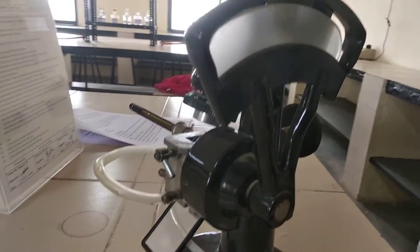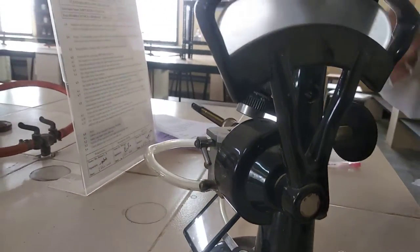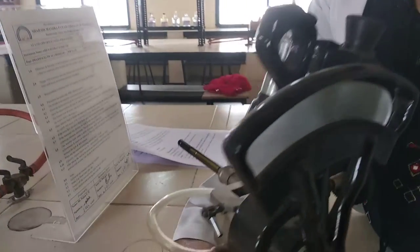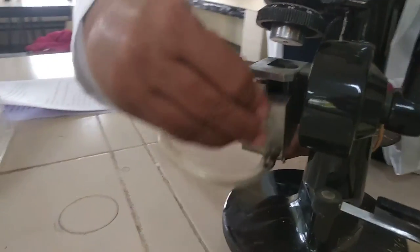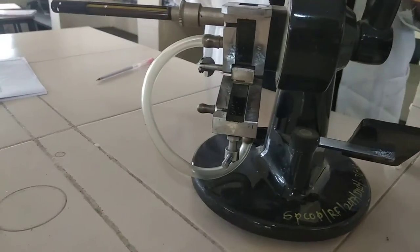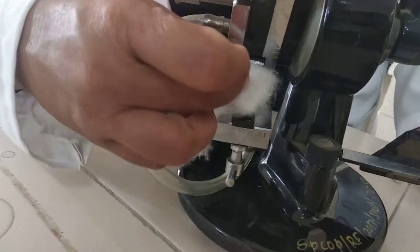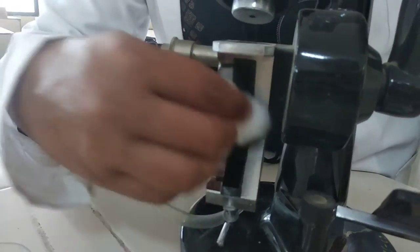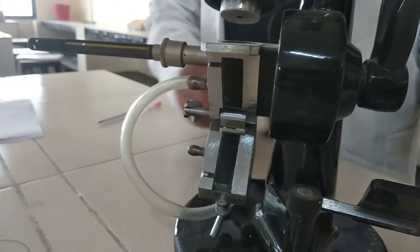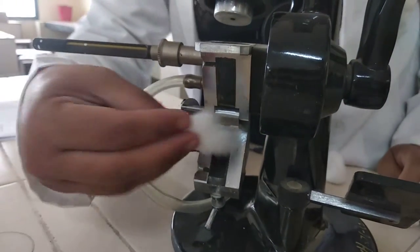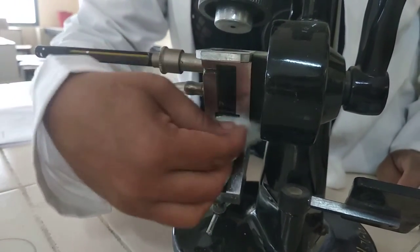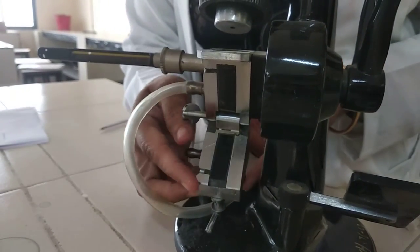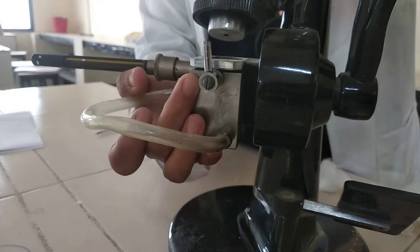After taking the reading, the prisms are cleaned. Afterwards, whenever your reading is finalized, again you have to clean this prism, both sides, because for next preparation we have to keep it clean. We have to again clean it with acetone solution and then dry it and close the prism.